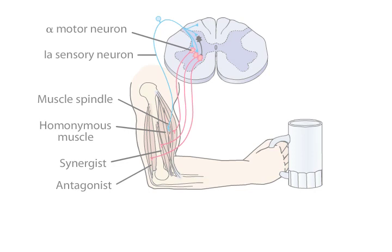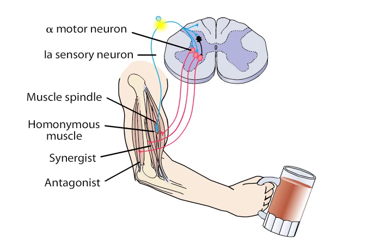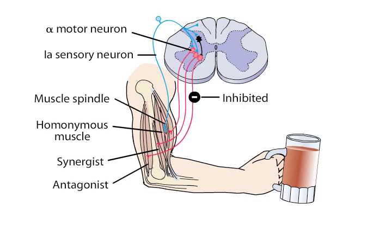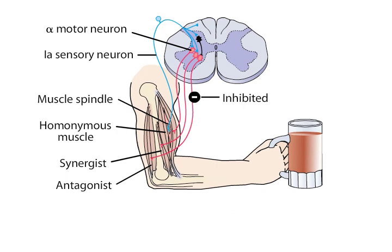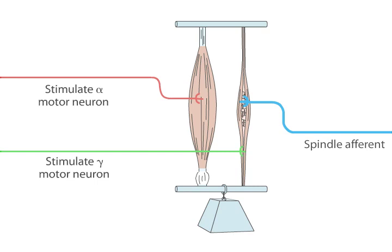When the muscle is stretched, the afferent volley from the muscle spindle is relayed to the alpha motor neurons, and an efferent volley returns to the muscle. Since muscles are always under some degree of stretch, this reflex circuit is normally responsible for the steady level of tension in muscles, called muscle tone.